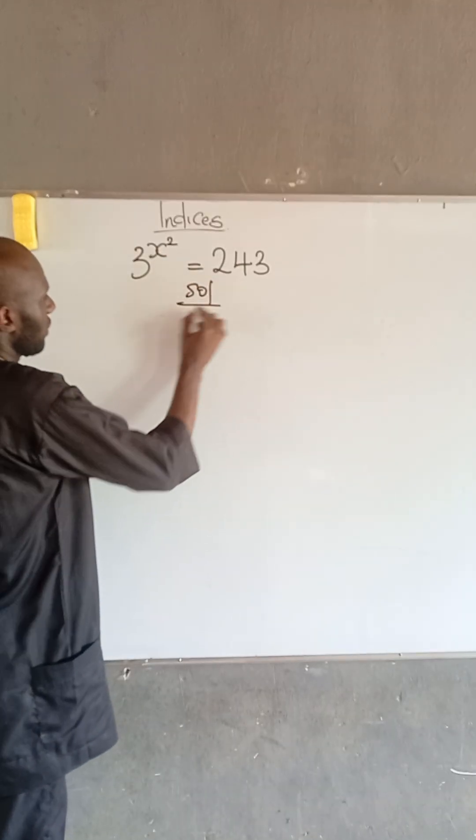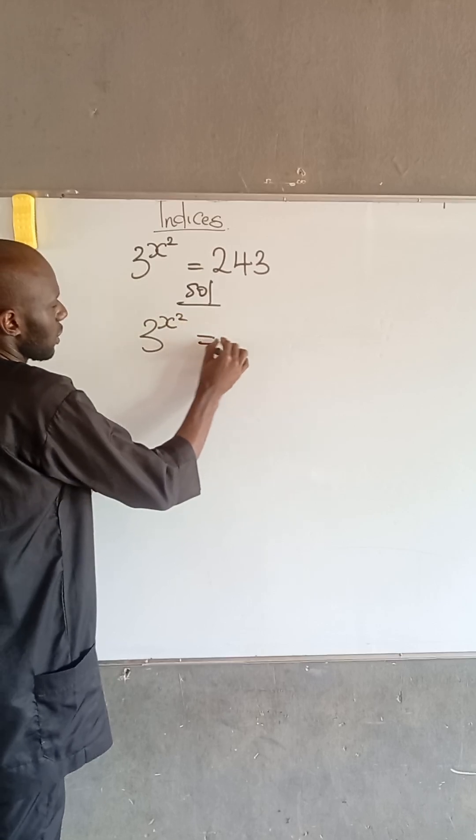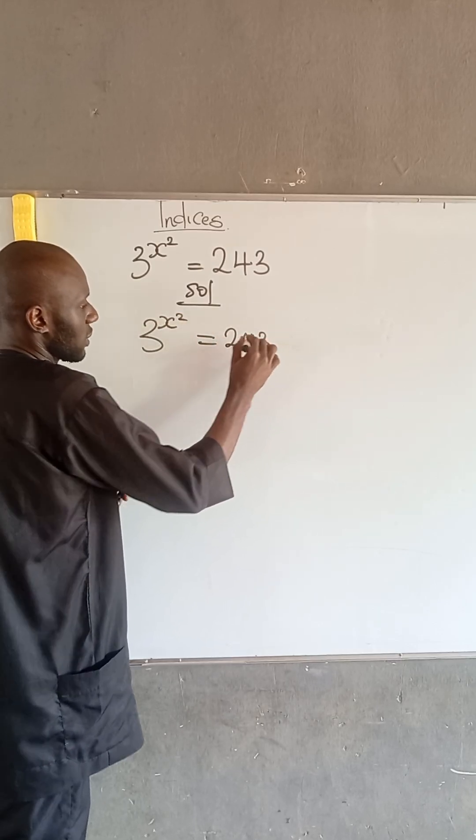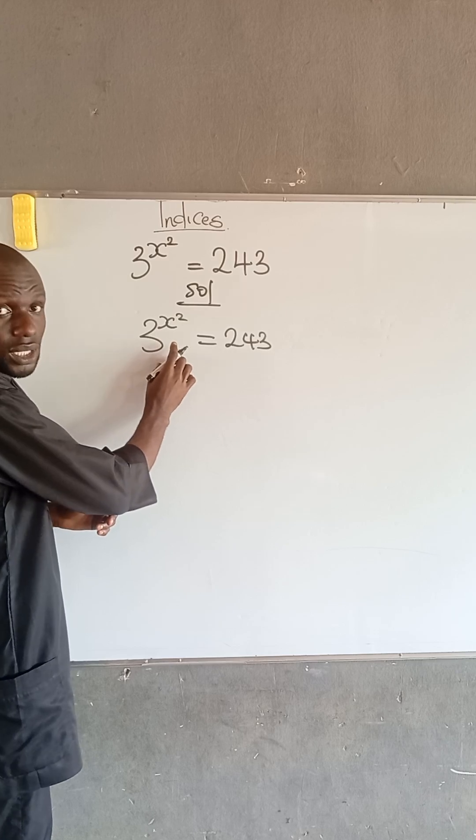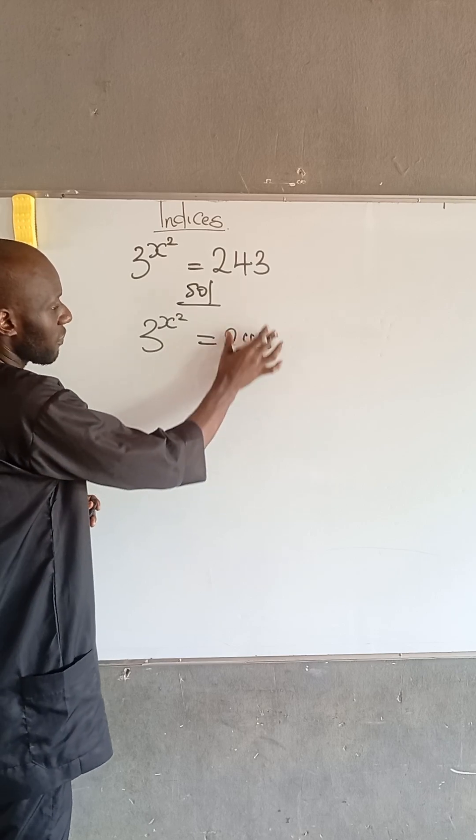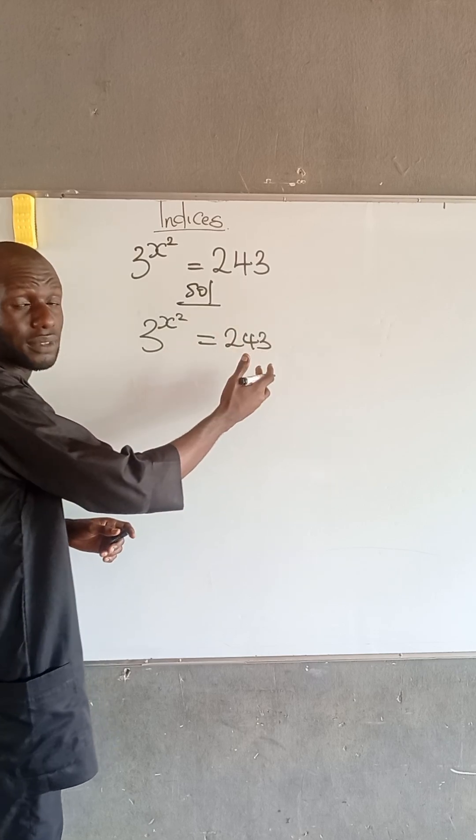We have 3 to the power of x squared is equal to 243. If you look at the left-hand side, we have a base of 3. Can we express the value at the right-hand side to have the base of 3?